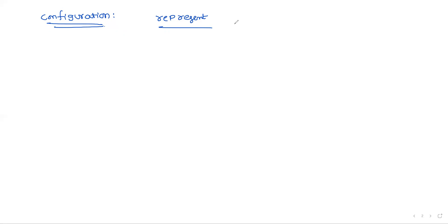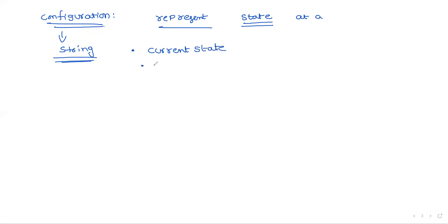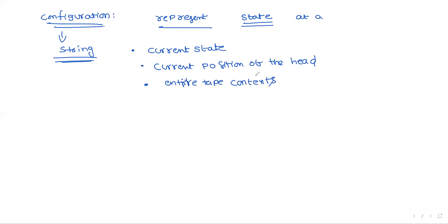Before going further we need to know the meaning of the term 'configuration.' Configuration means the representation of the entire state of a Turing machine at a particular moment. In simple terms, a Turing machine at a particular state is represented in a string format. The string contains three things: the current state, the current position of the head, and the entire tape contents.